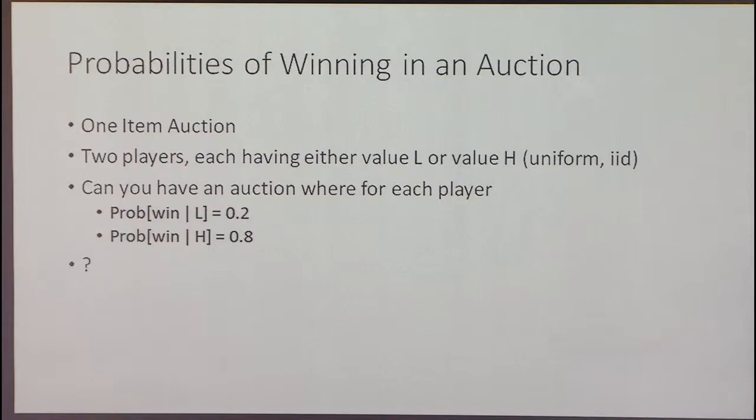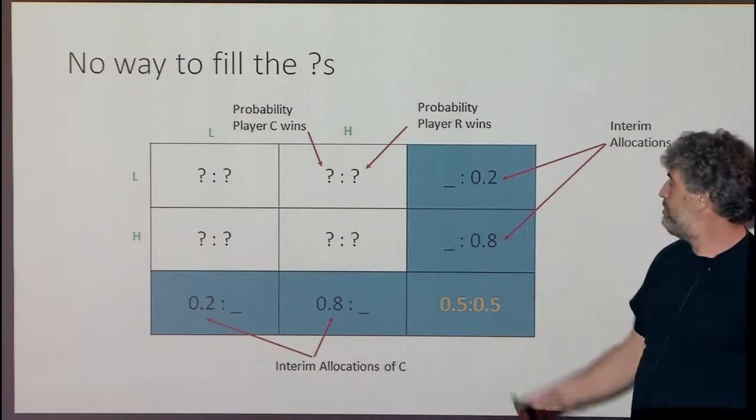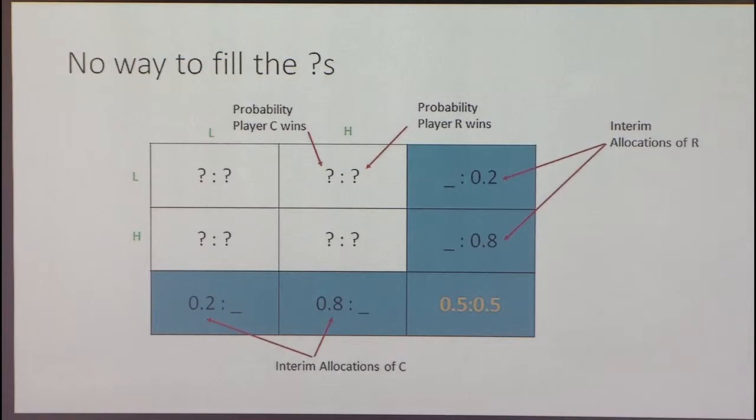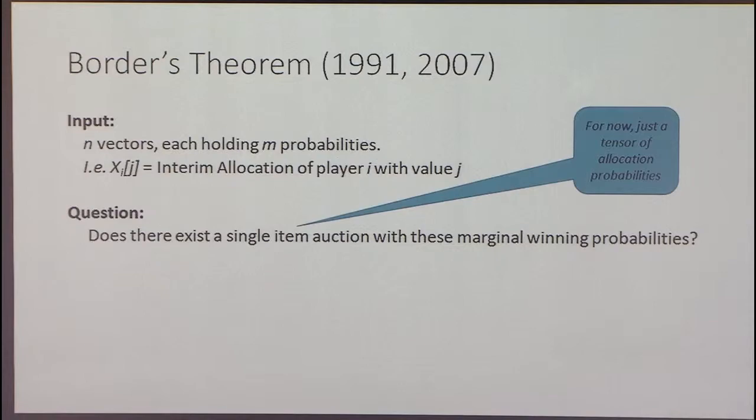Can you always do that? For example, suppose I want 0.2 with low and 0.8 with high. Can you do that? The answer turns out to be no. If you try to fill in the question marks to get those averages, you will not be able to do that if you constrain the probabilities to be between 0 and 1. So how do you know that you cannot? Well, Border gives a completely general solution to these types of questions.